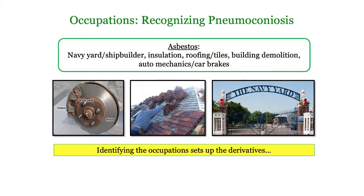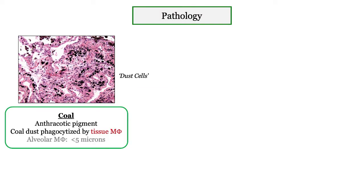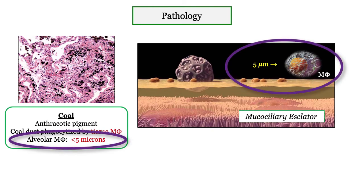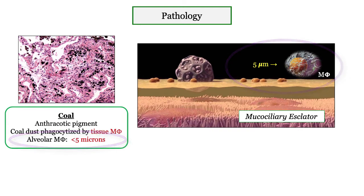Identifying the occupations or source of exposure doesn't get you across the finish line — this information just sets you up for the derivatives that follow, and the first set focuses on pathology. For coal workers' disease: the major takeaways include the presence of anthracotic pigment representing dust phagocytized by alveolar macrophages, appropriately called dust cells. Particles smaller than 5 microns tend to escape mucociliary transport and are ingested by the tissue macrophage.